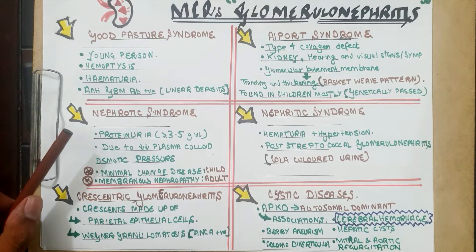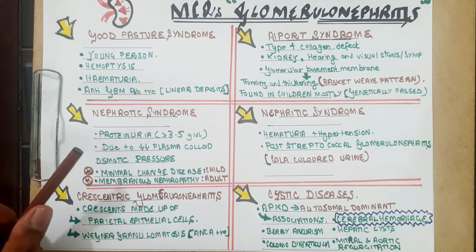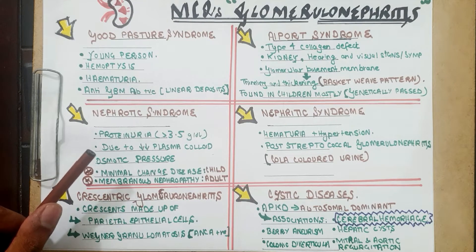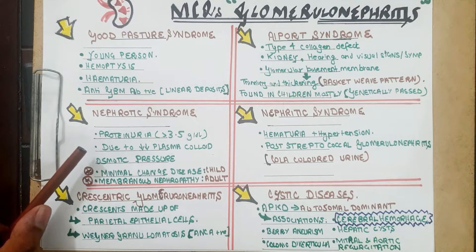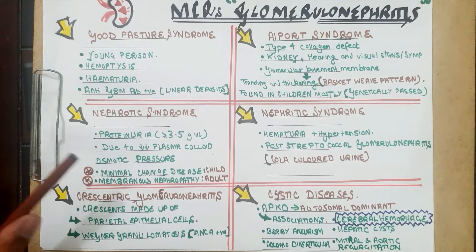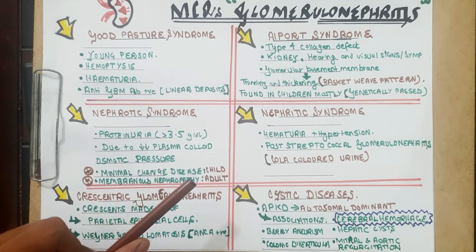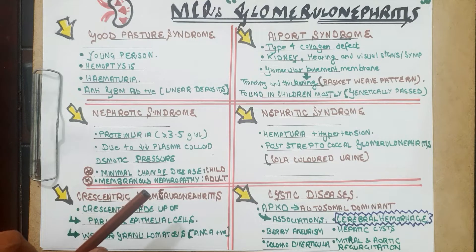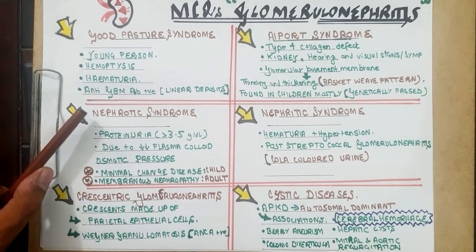We move on to nephrotic syndrome. In nephrotic syndrome, proteinuria is the key feature, with a value greater than 3.5 grams per deciliter. An important MCQ is that nephrotic syndrome is due to decreased plasma colloid osmotic pressure. Minimal change disease mostly occurs in children, and membranous nephropathy mostly occurs in adults — both are types of nephrotic syndrome.